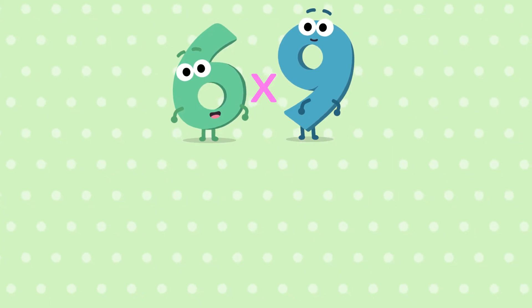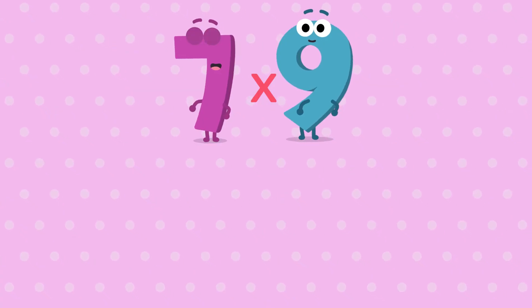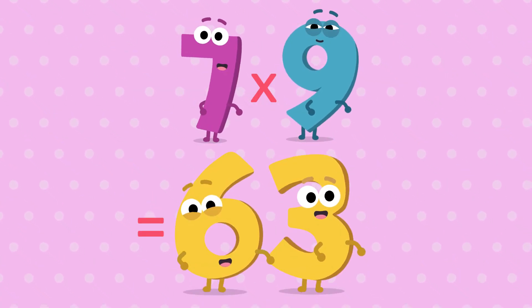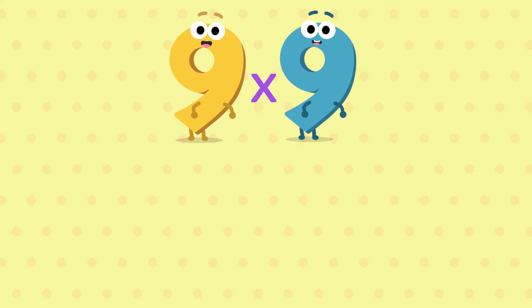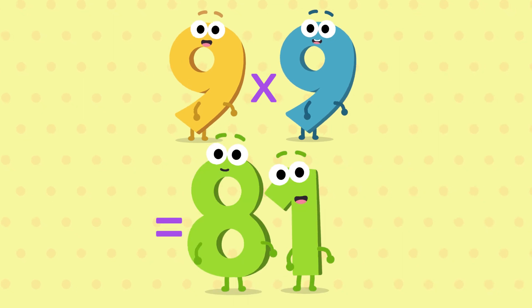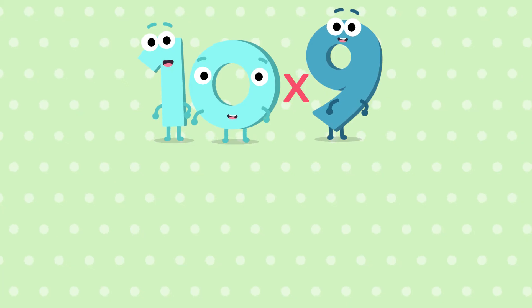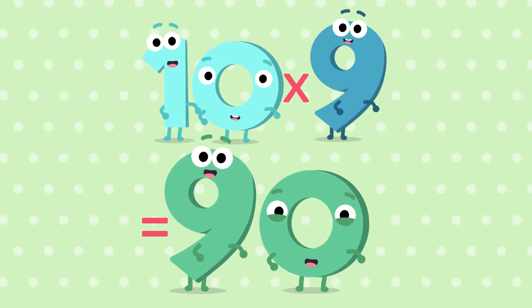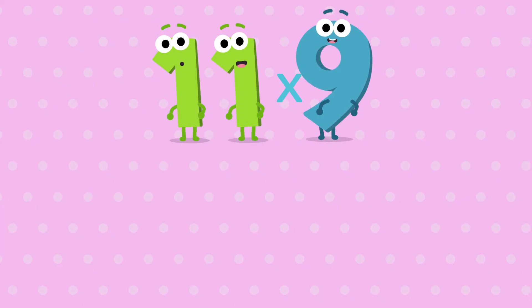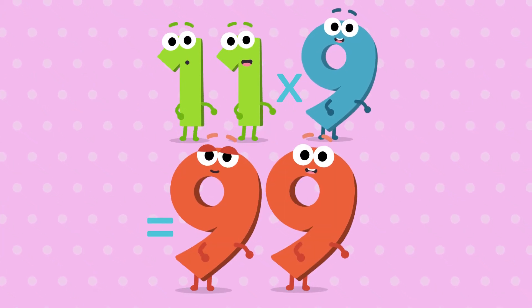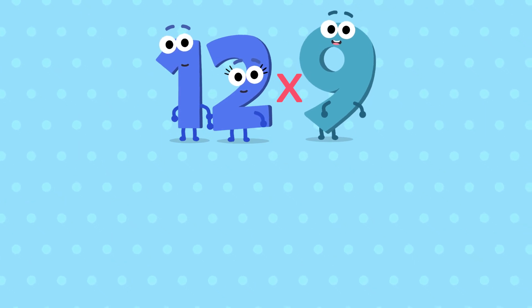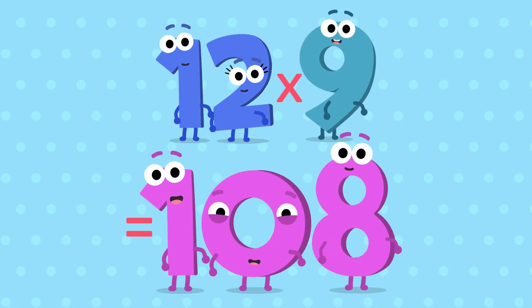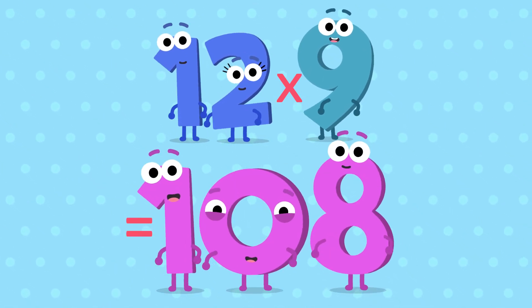6 nines are 54, 7 nines are 63, and 8 nines are 72, 9 nines are 81, 10 nines are 90, 11 nines are 99, 12 nines are 108.